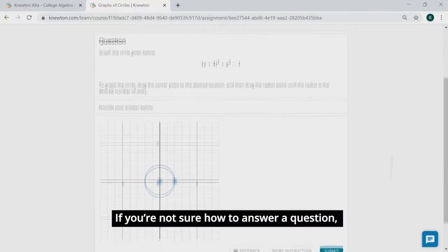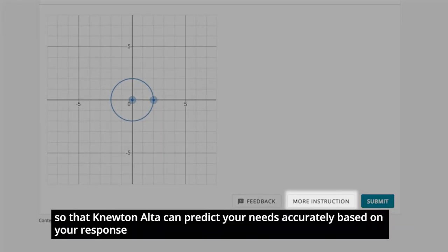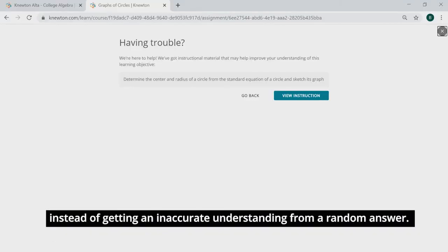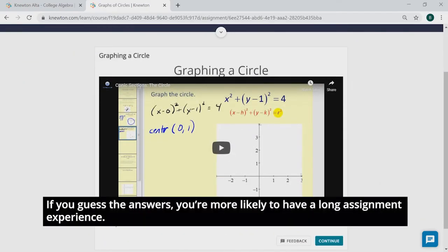If you are not sure how to answer a question, it's always a better idea to review more instruction than it is to guess, so that Newton Alta can predict your needs accurately based on your response instead of getting an inaccurate understanding from a random answer. If you guessed the answers, you're more likely to have a long assignment experience.